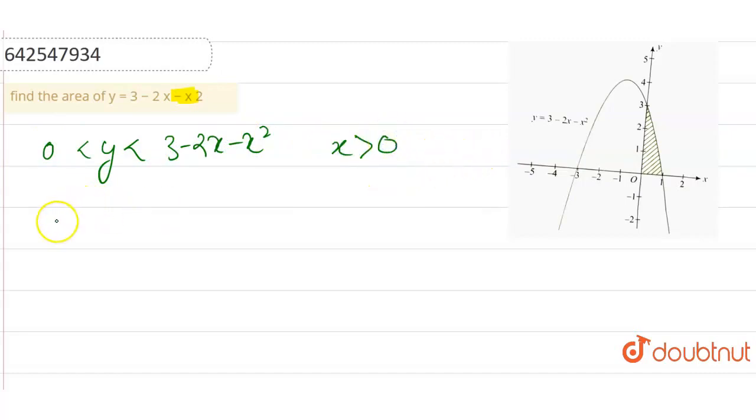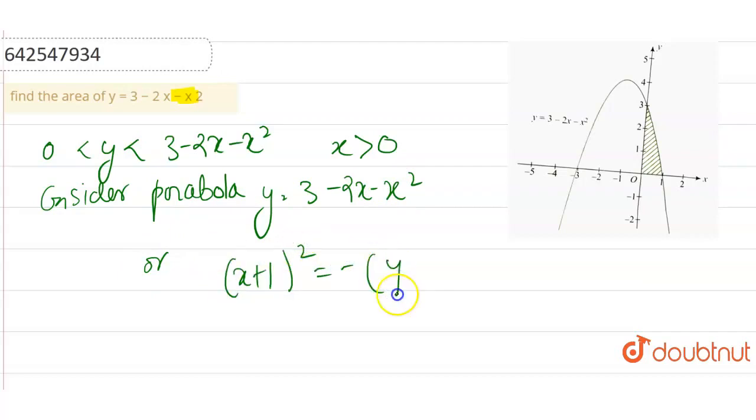Consider parabola which is y equals 3 minus 2x minus x squared. Or, (x+1)² equals minus (y-2). We just convert it into this form so that it's easy to form the equation graph.